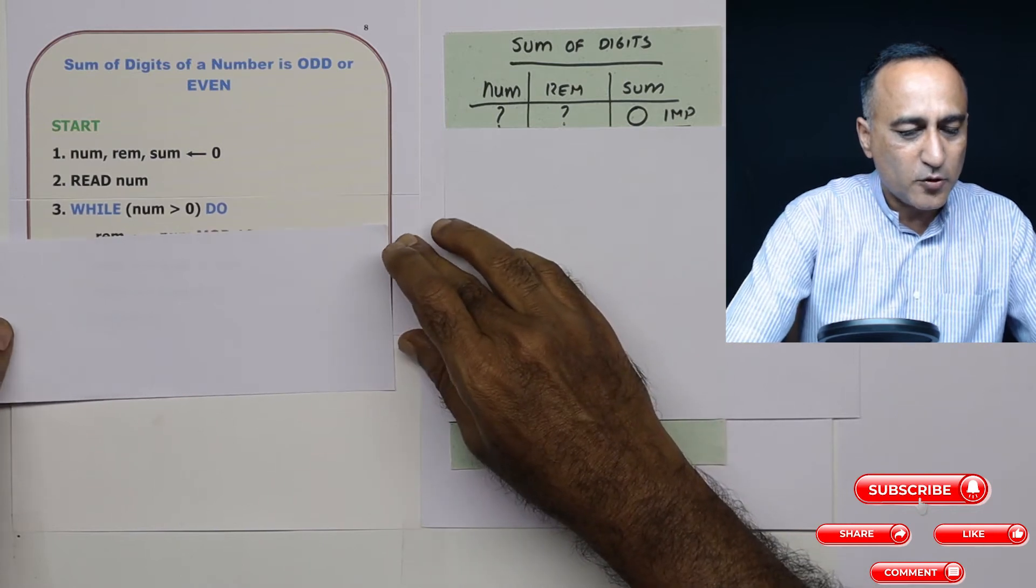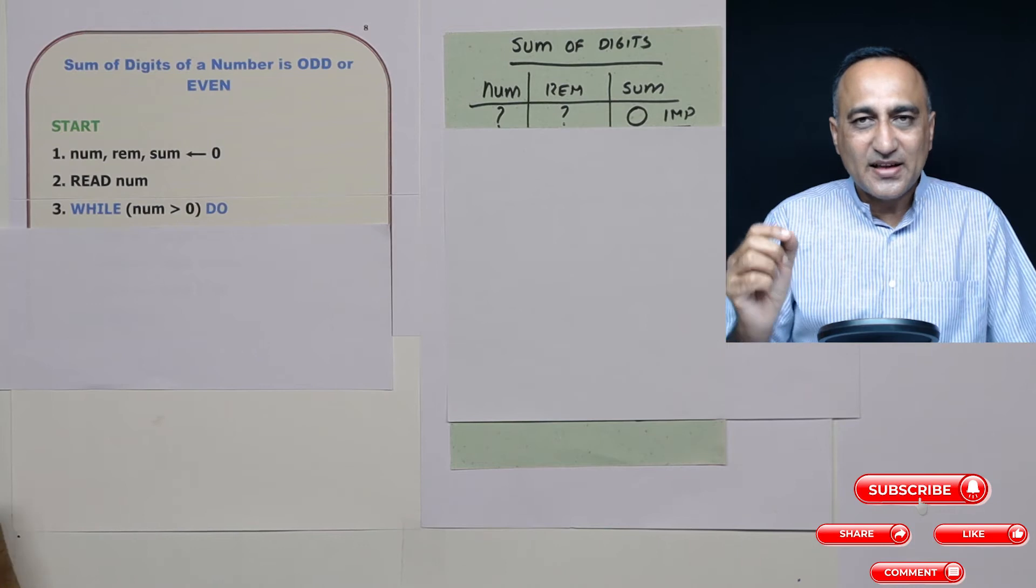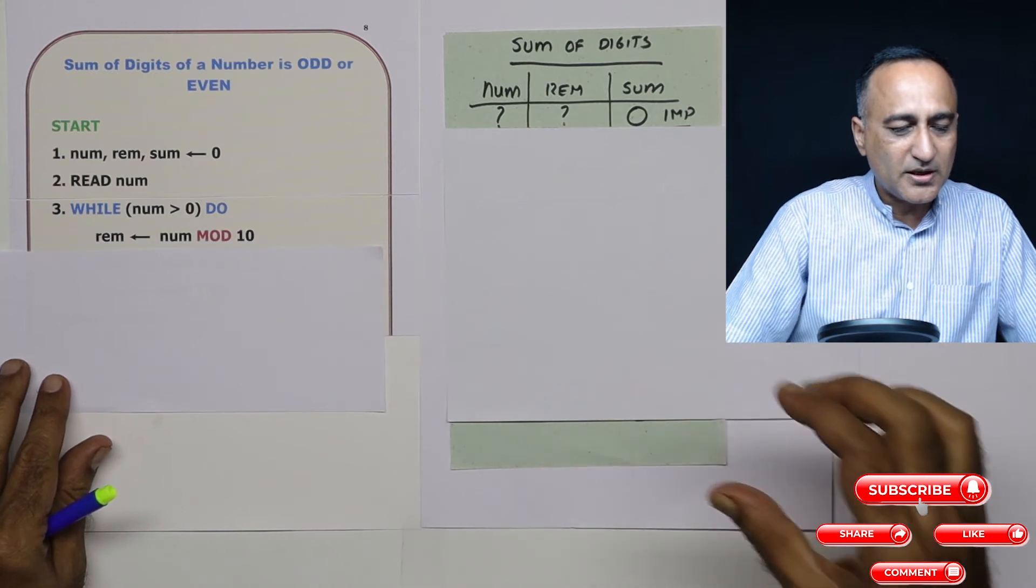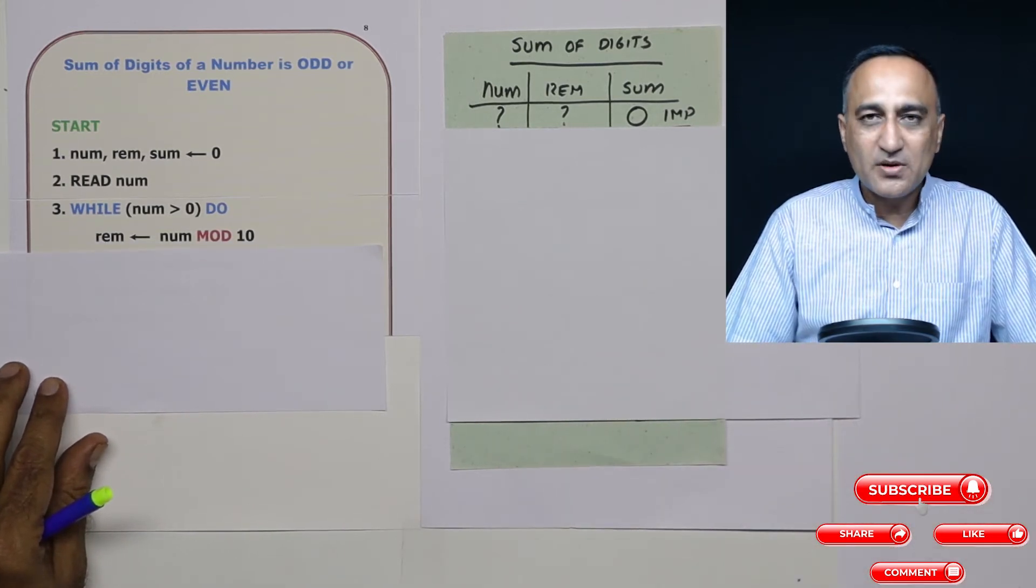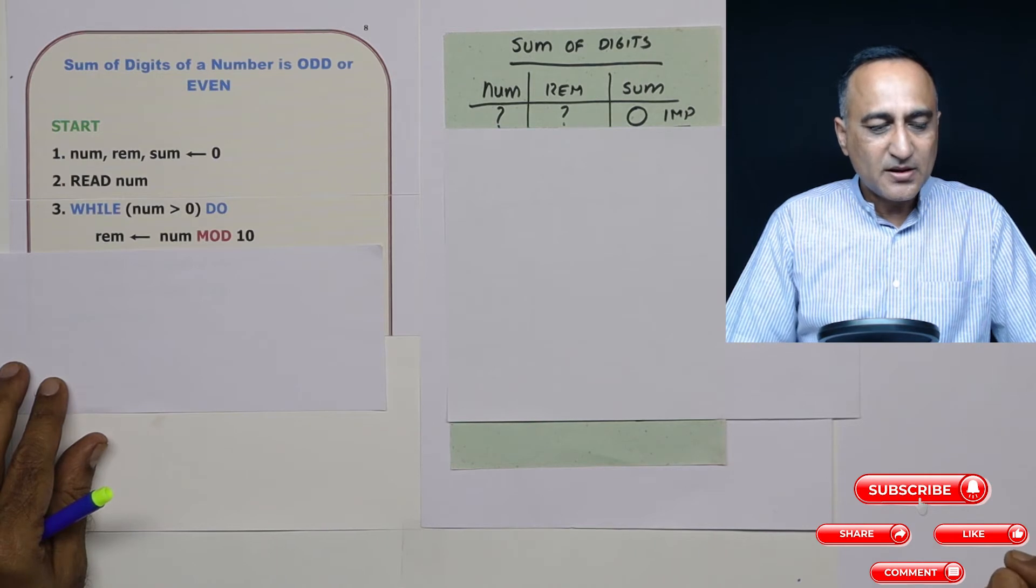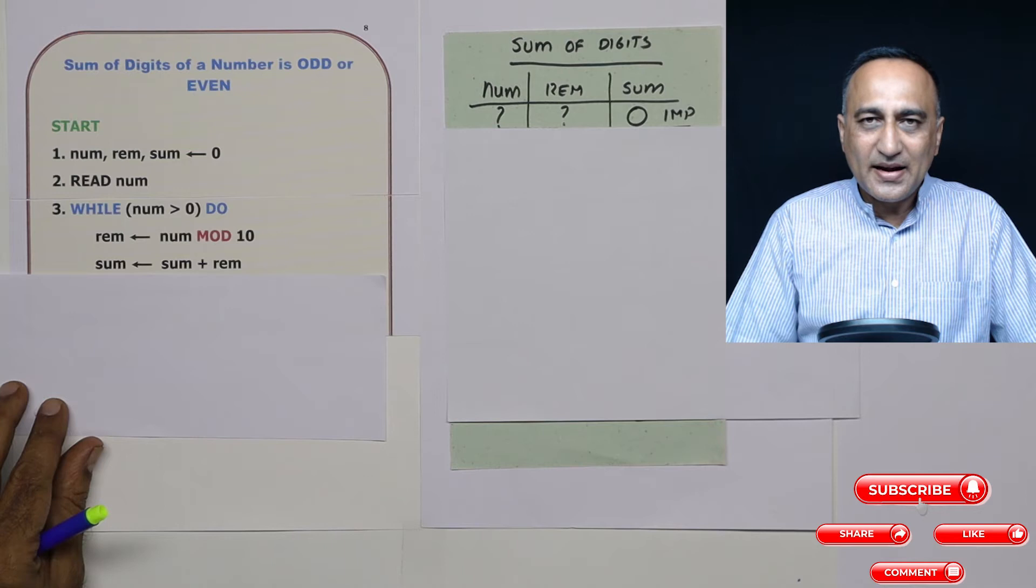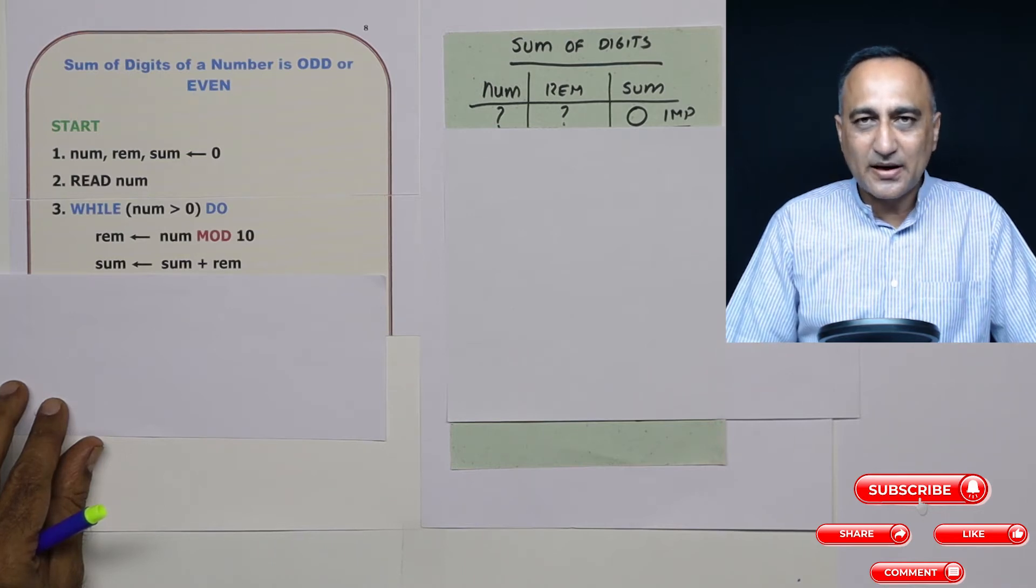What I am going to do here is I am going to first extract the remainder, that means the rightmost digit from that number. So what will be the logic? Remainder will be number mod 10. So it will give me the rightmost digit. Then I can take that remainder and add it to sum. So I can say sum is sum plus remainder.